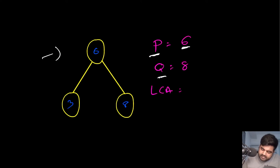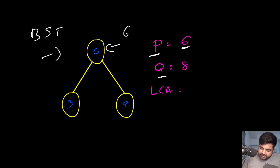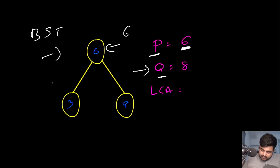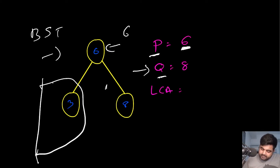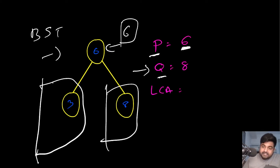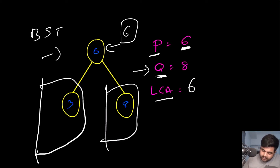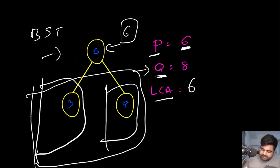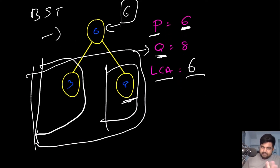In this first case, the given value of P is actually six. As we start traversing through this binary search tree, we immediately find six present here. Since we find six, the only possibilities are that Q falls somewhere on the left or right subtree of this node. We already found the value six here, so we can immediately return six as the lowest common ancestor, because Q is somewhere inside the remaining binary search tree — in this case on the right side of the subtree.